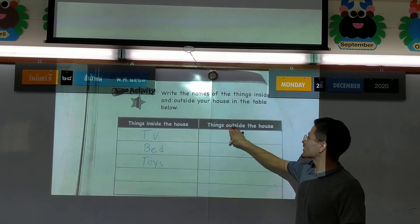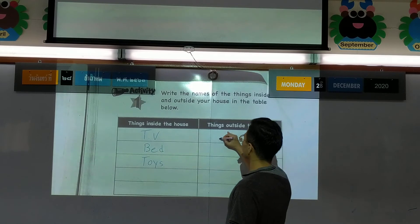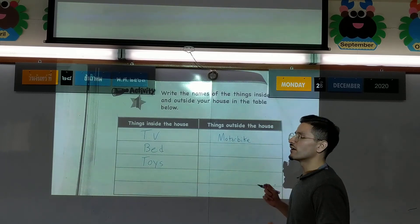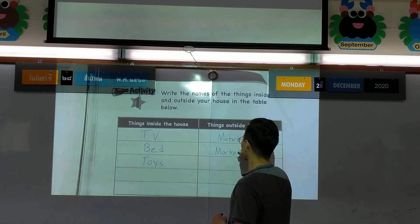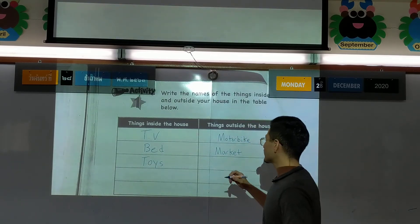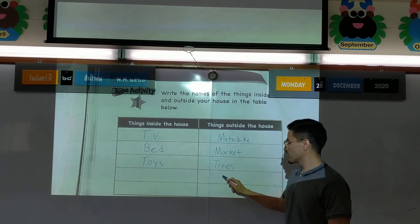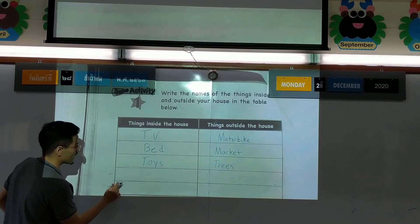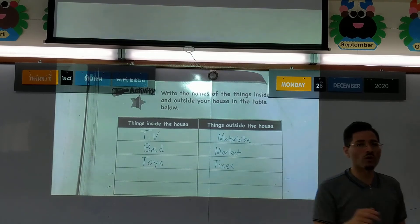Now, things outside the house - when I go outside, what do I see? I see the motorbike. I see the market. I see the trees. Now you write two more things - what else do you see outside? You have to write two more things you see inside the house and two more things you see outside the house.